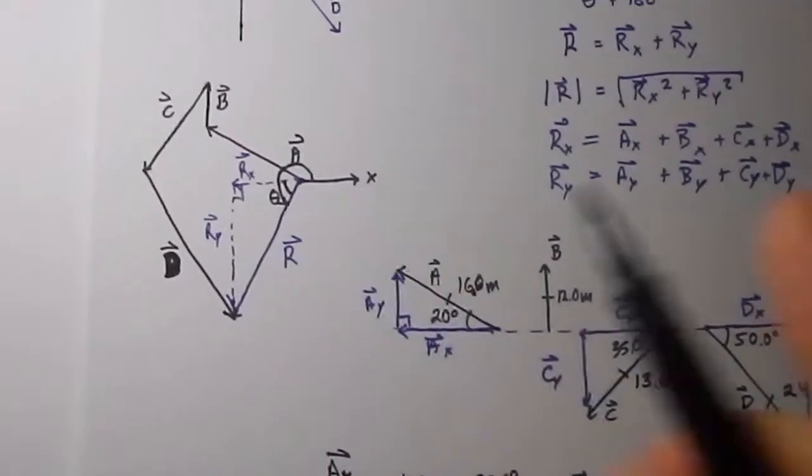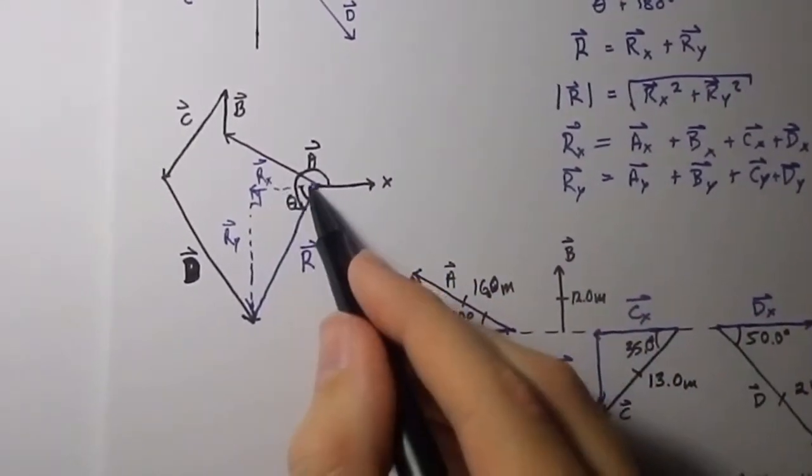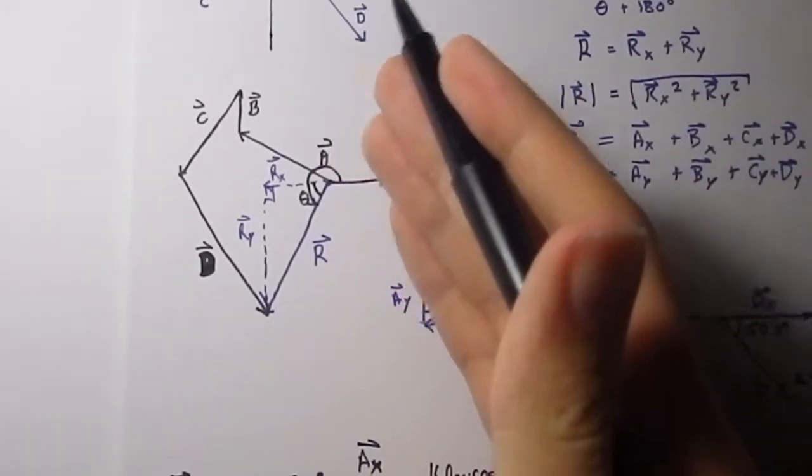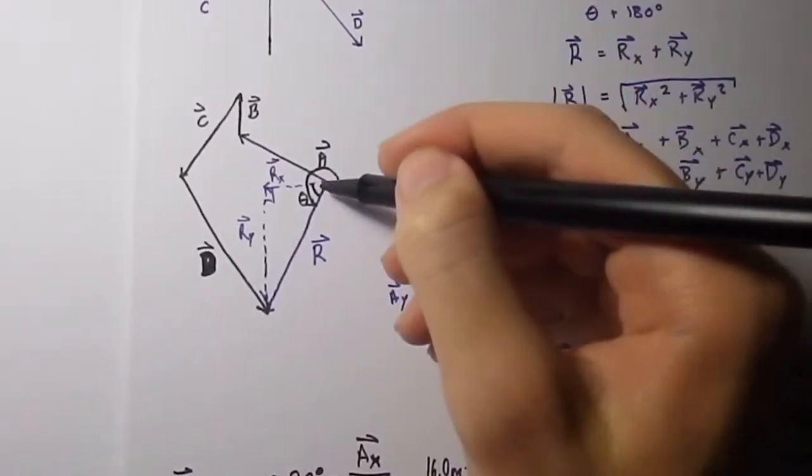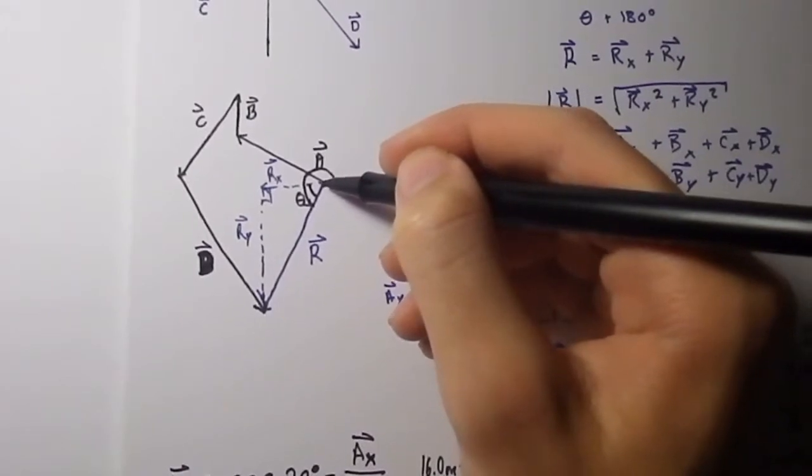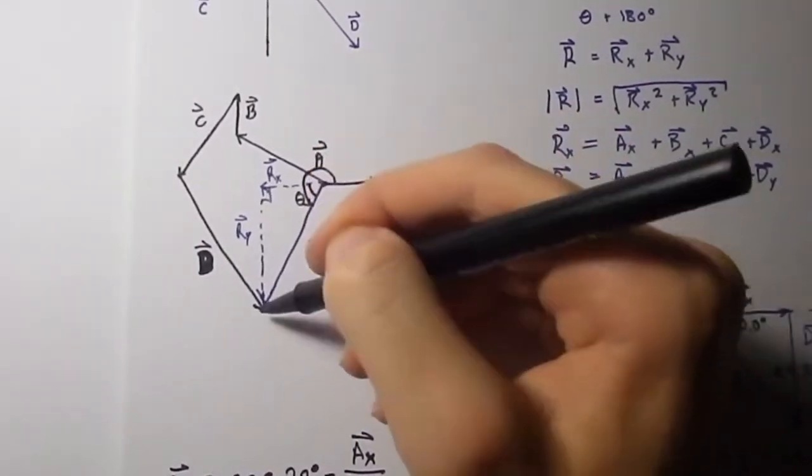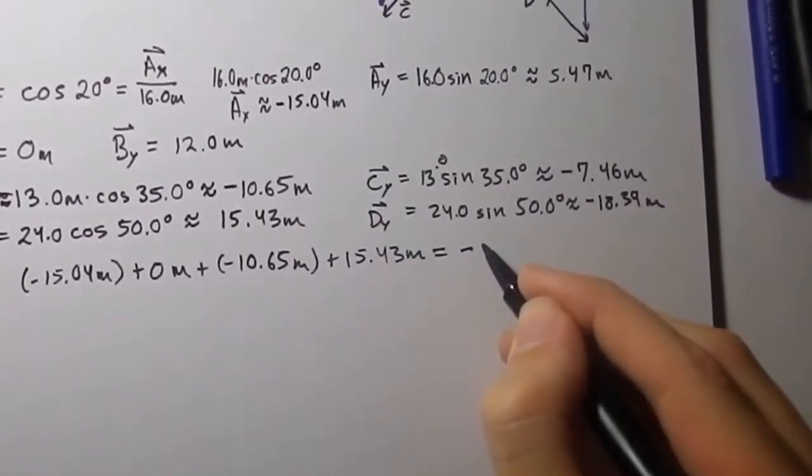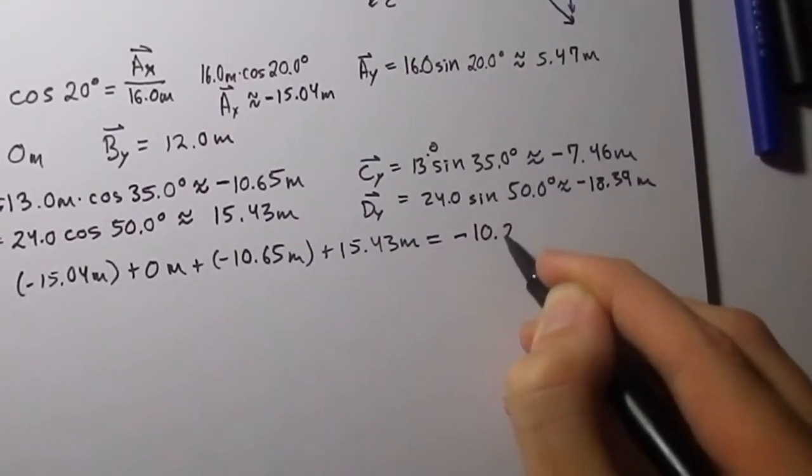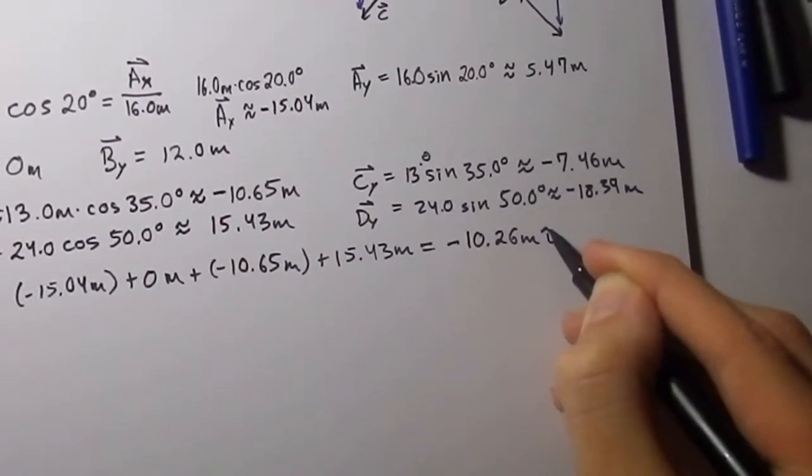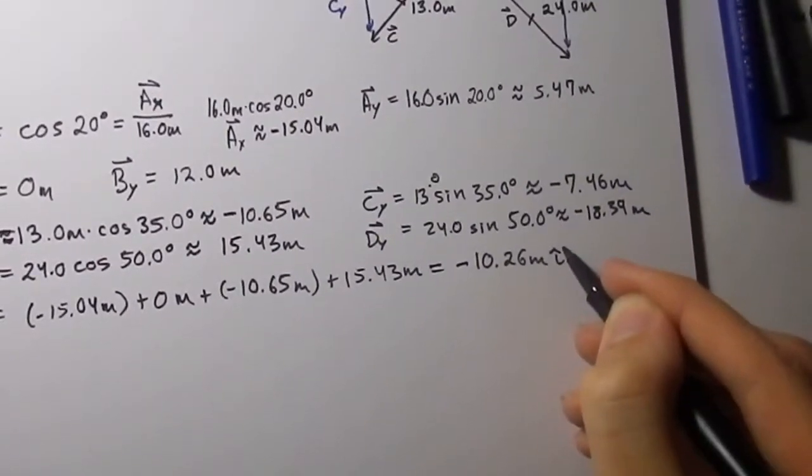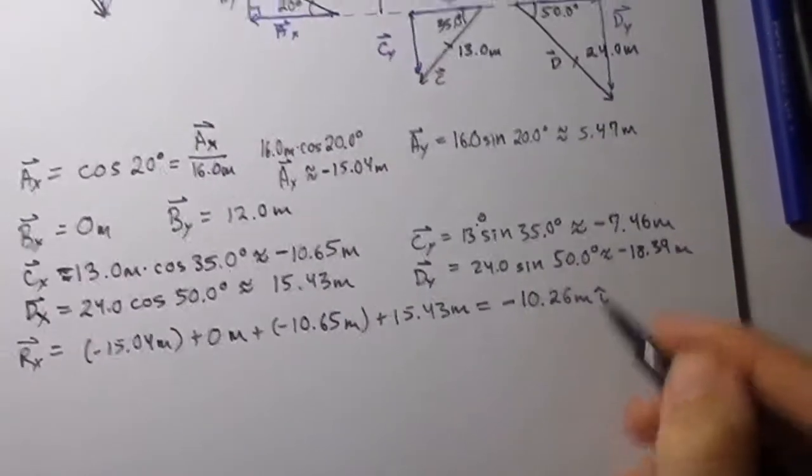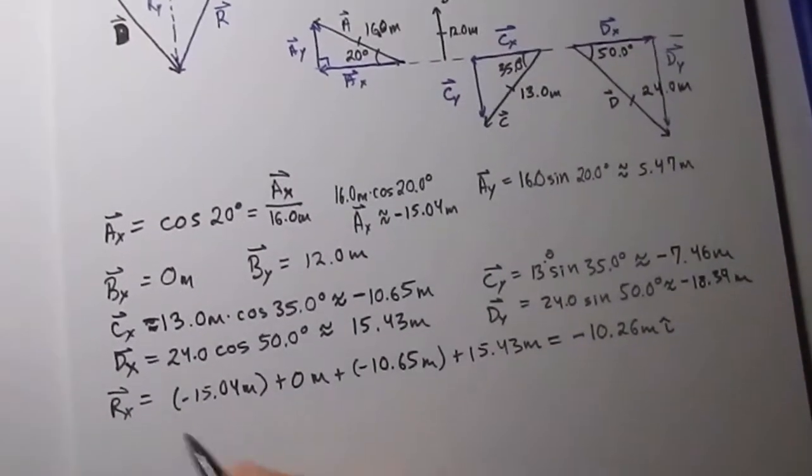Now, first, I want us to predict something. I should have said this before. I predict that the x-component is going to be negative, and the y-component is going to be negative, assuming that you drew this fairly to scale. So I'm going to make a prediction that the x is going to be negative, and the y is going to be negative. And, indeed, we have negative 10.26 meters i-hat, which means it's going in the x-direction. Sometimes it's written as x-hat.